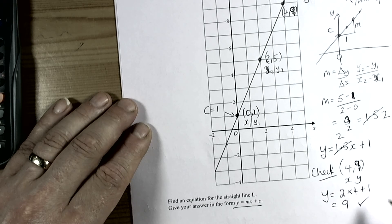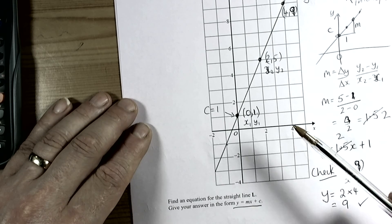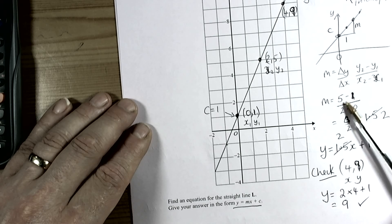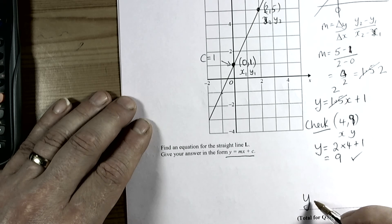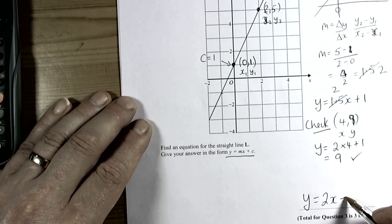So my check has now worked, and hence the reason that you go through and do this checking and go back through. The final answer on the answer line will be y equals 2x plus 1.